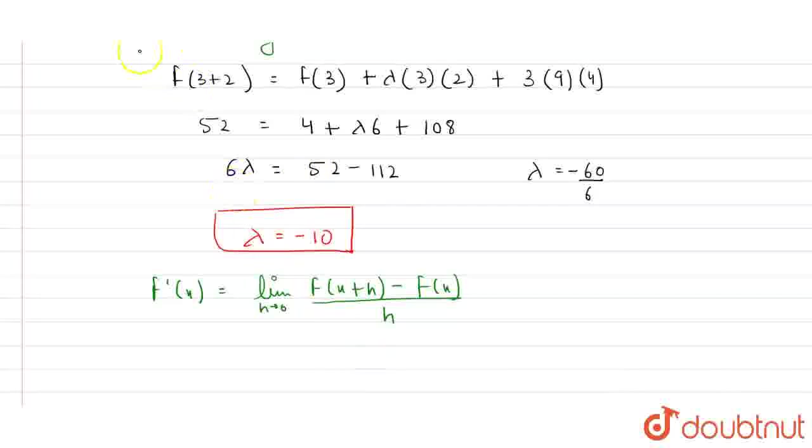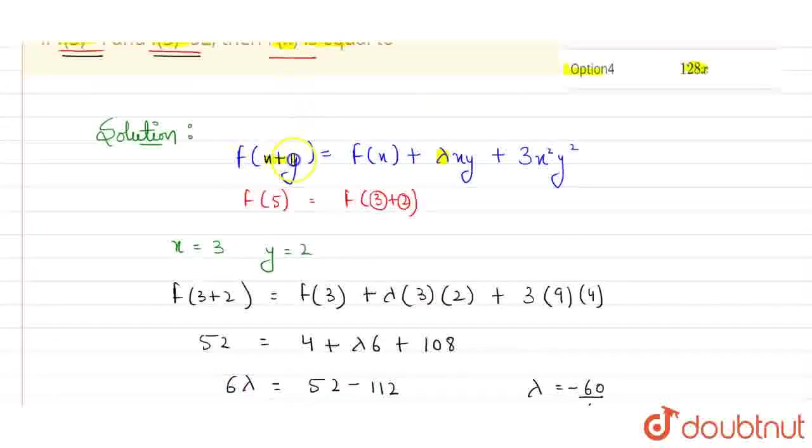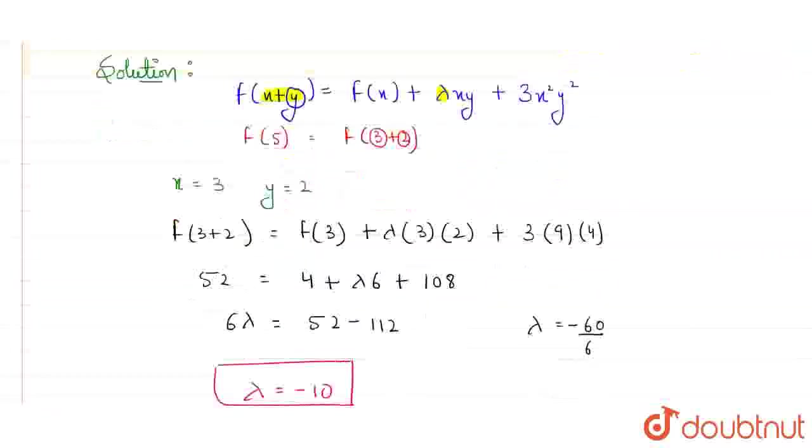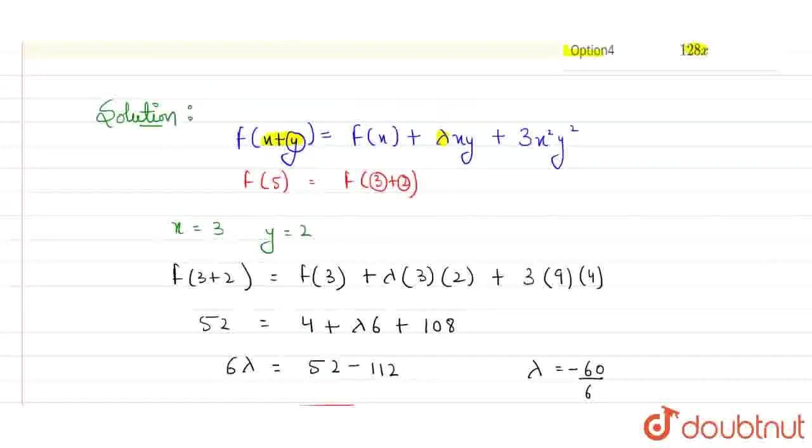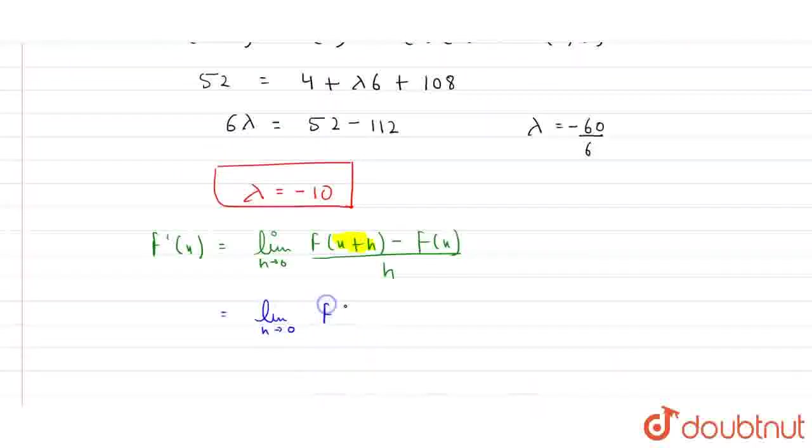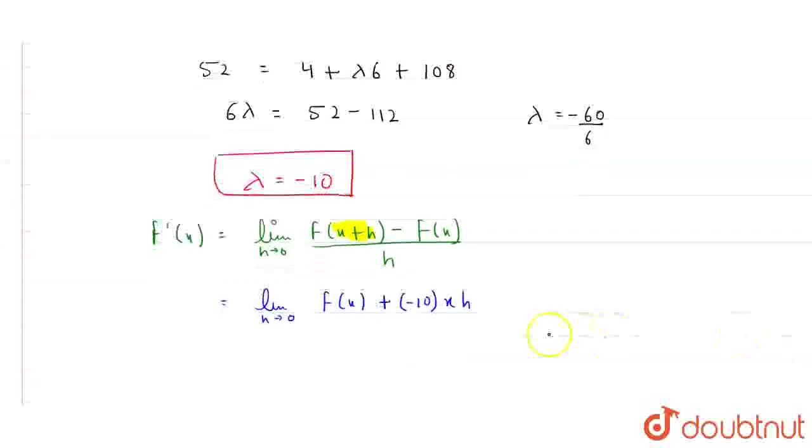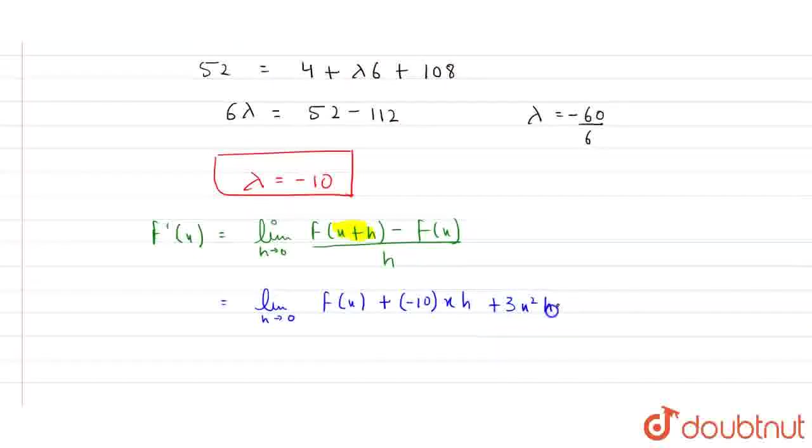Now, what we'll do here, I'm having x plus h. And in function, I'm having x plus y. If I'll just replace this y with h, then I can have function for x plus h. Now, here I'll write limit h tends to 0, just replace y with h. So, my function is f of x plus lambda is minus 10, minus 10 x and y is h. And now, I have plus 3 x square h square minus f of x whole divided by h. Here minus of fx and positive fx will get cancelled.